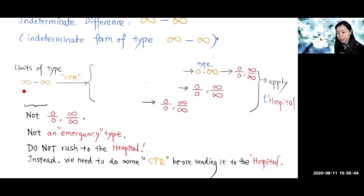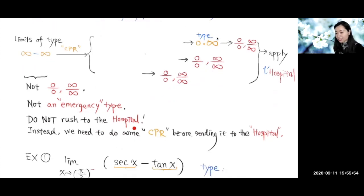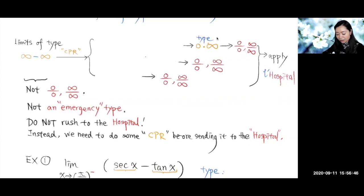This type, infinity minus infinity, is not one of those two emergency types that we rush to the hospital and apply L'Hôpital's rule to right away. Instead, we're going to perform some CPR before sending it to the hospital. What kind of CPR can we perform here so that we can change this type into one of the two emergency types?